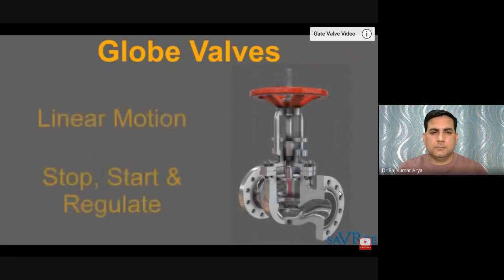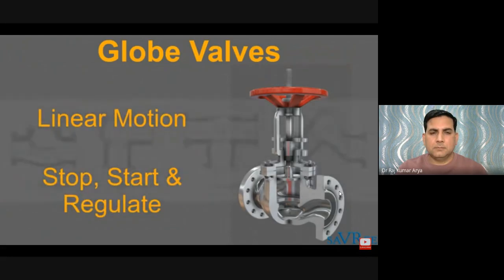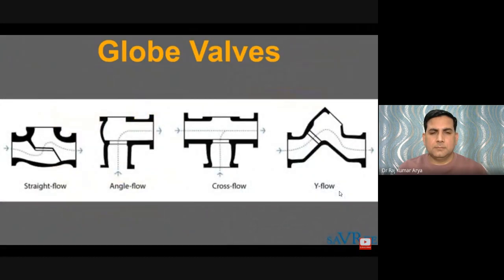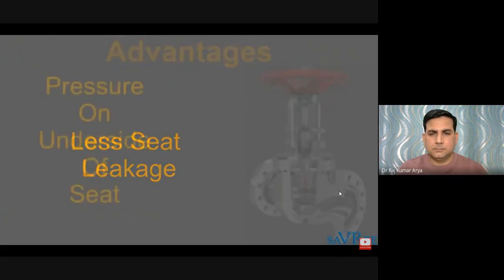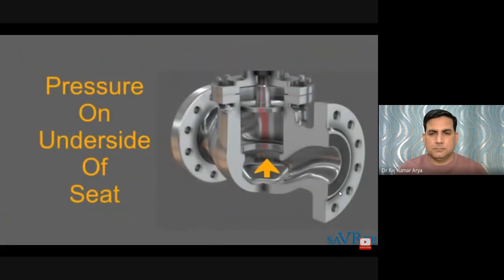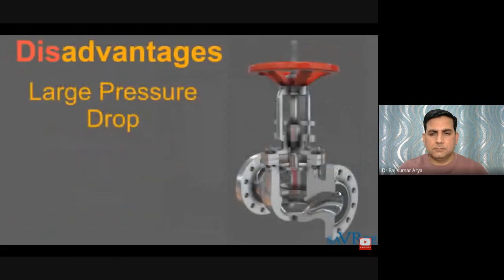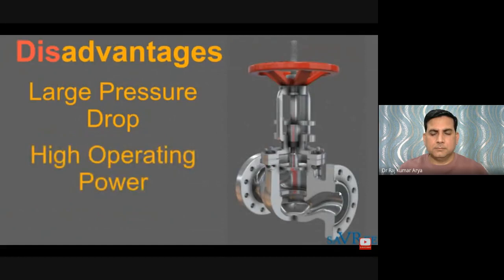The globe valve is a linear motion valve used to stop, start, and regulate fluid flow. There are four main globe valve designs: straight flow, angle flow, cross flow, and wide flow. Compared to a gate valve, a globe valve generally yields much less seat leakage, because the disc-to-seat contact is more at right angles, which permits the closing force to tightly seat the disc. Globe valves are almost always installed with system pressure on the underside of the valve seat. The largest disadvantage is a relatively large pressure drop across the valve, and large globe valves require considerable power to operate and are especially noisy in high-pressure applications.